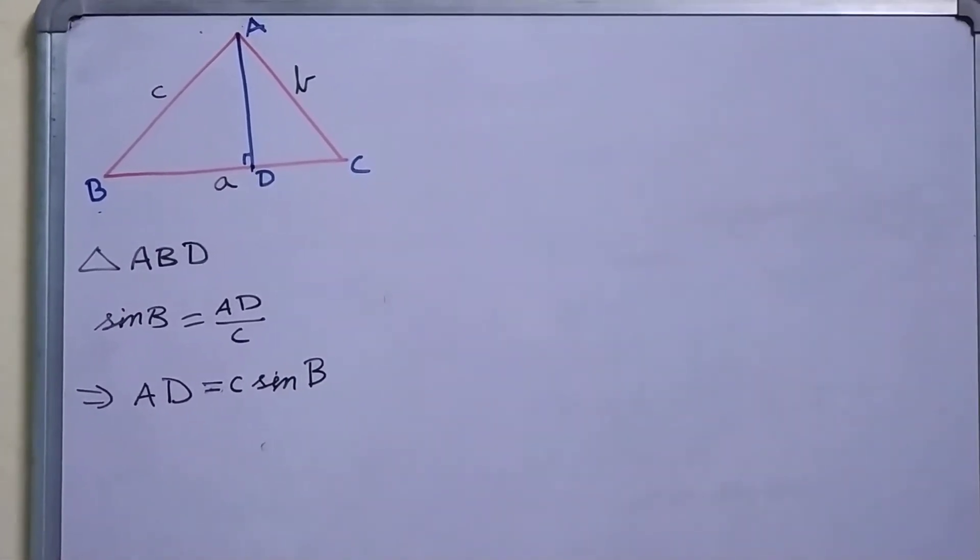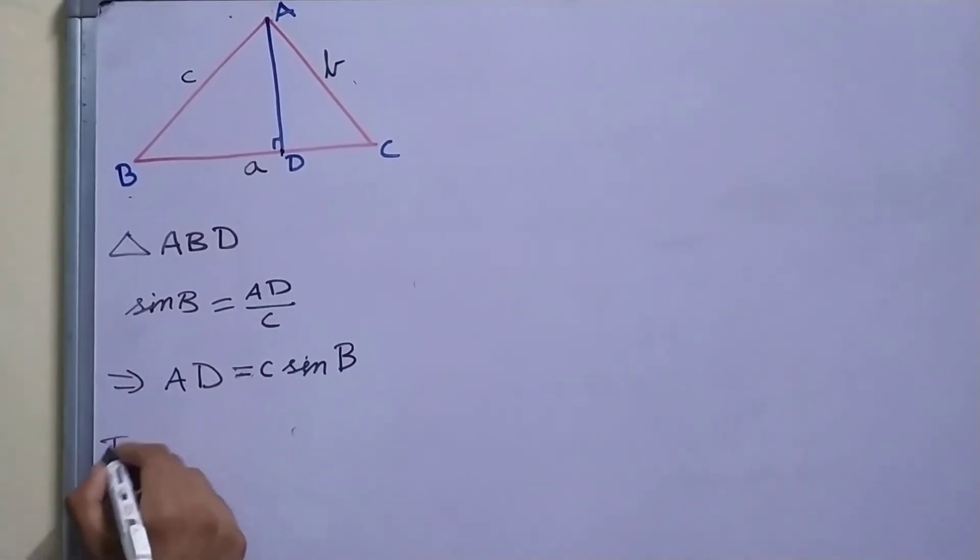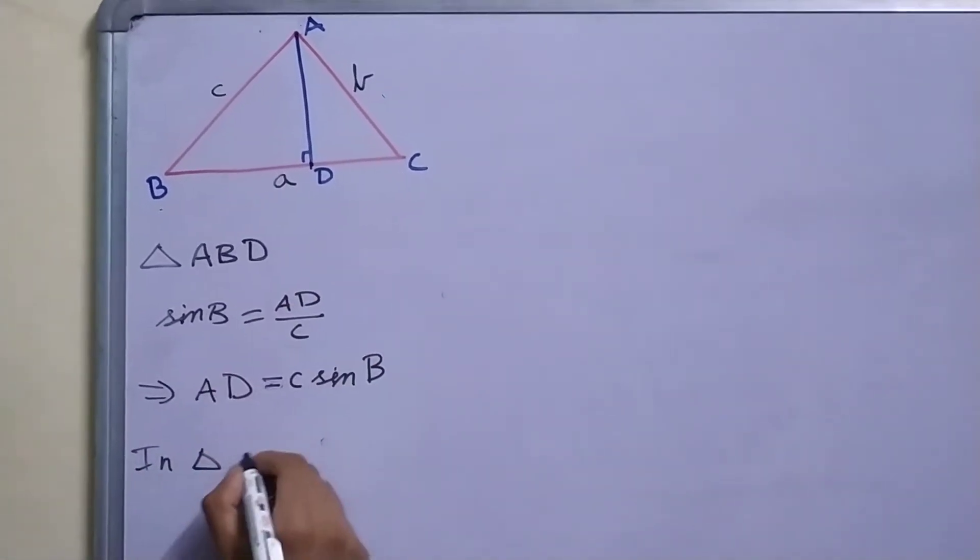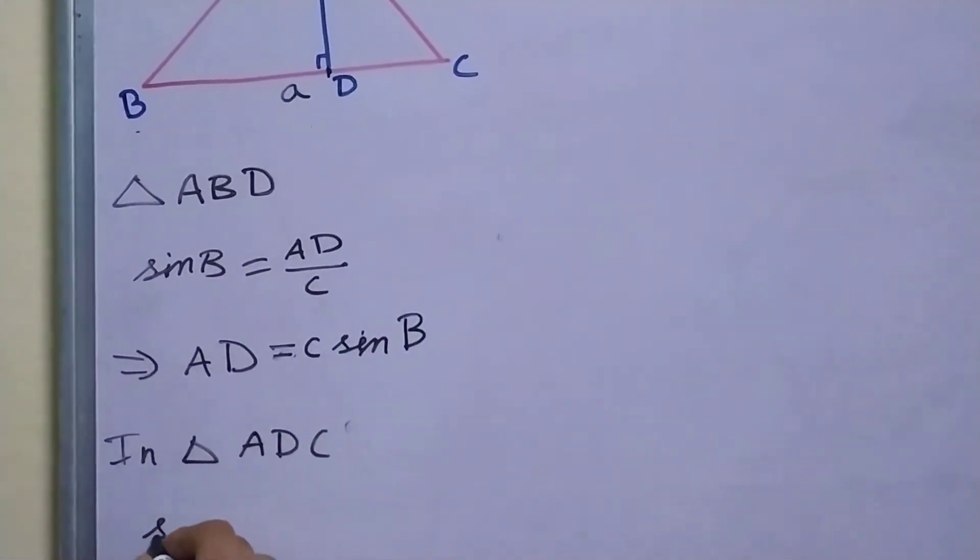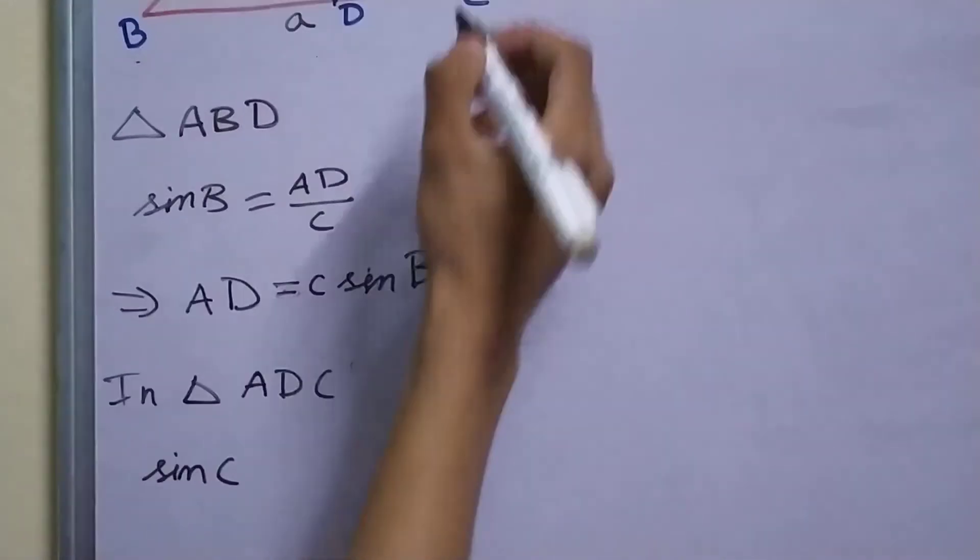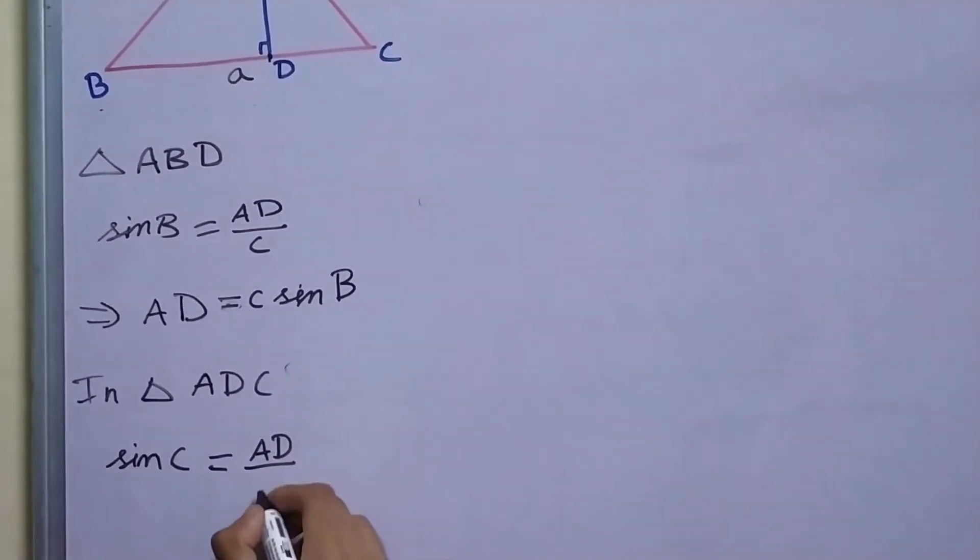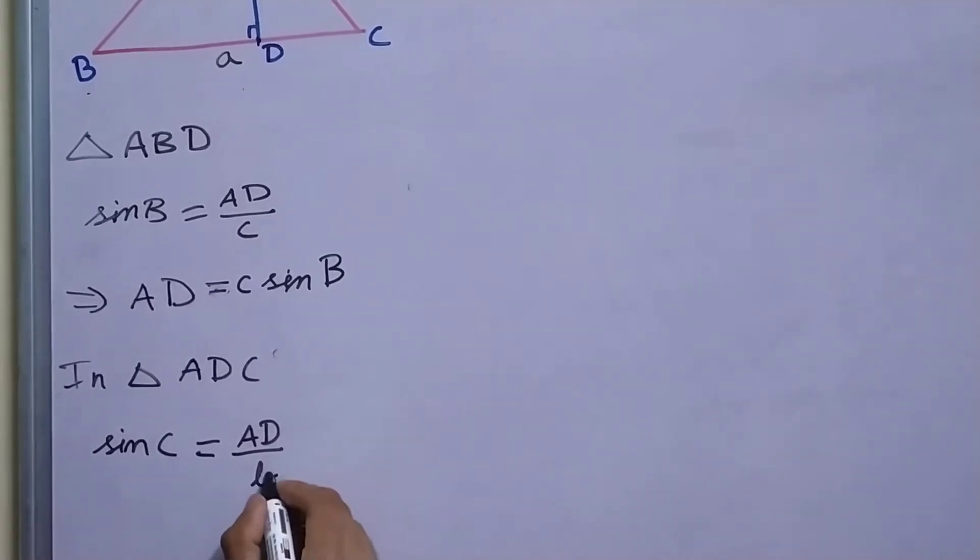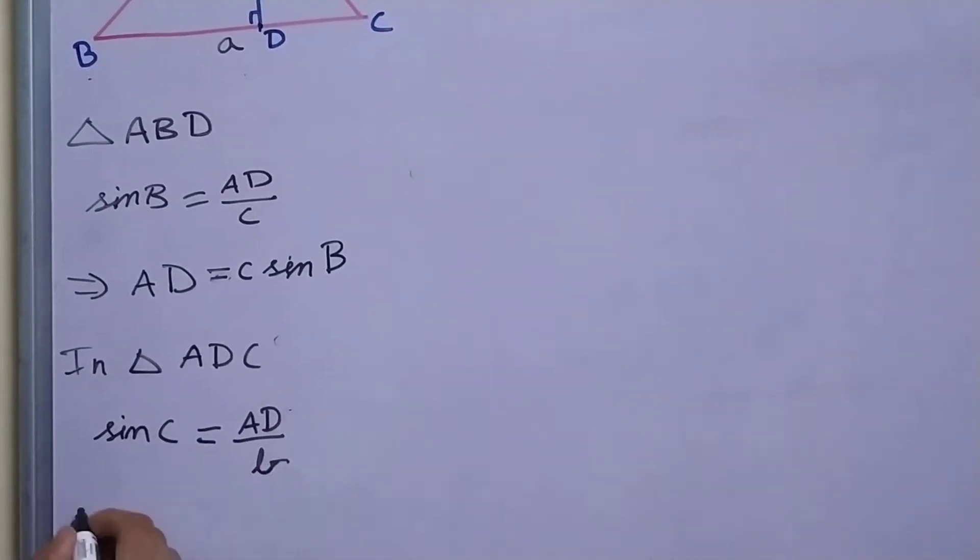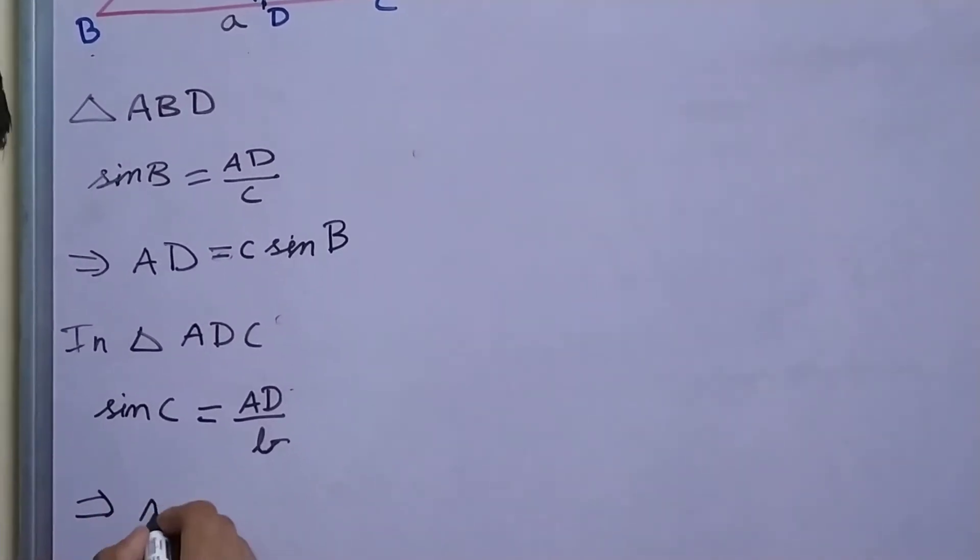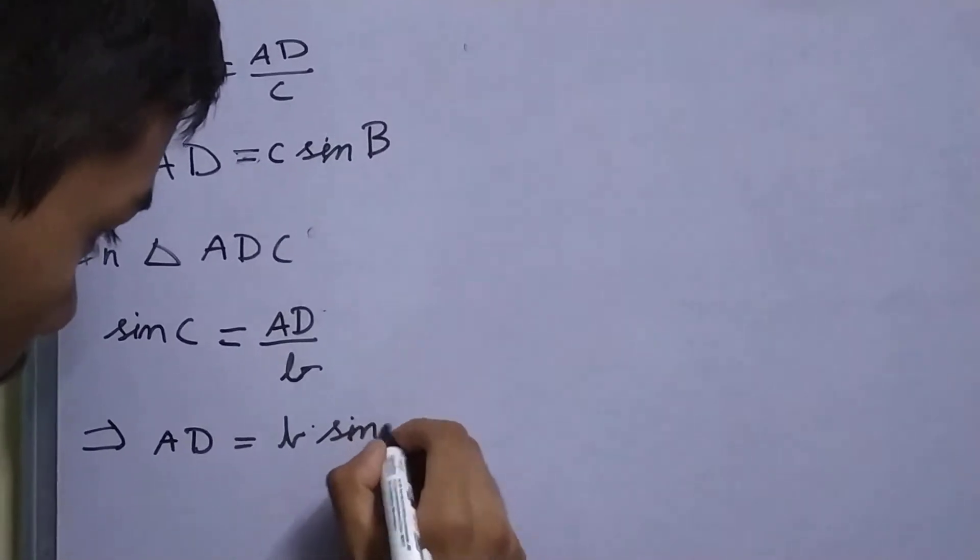And we can do the same thing in triangle ADC. So in triangle ADC, we find that sine C is equal to AD upon b, opposite upon hypotenuse. So we get AD equal to b sine C.